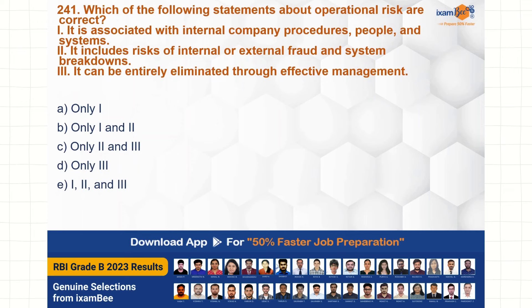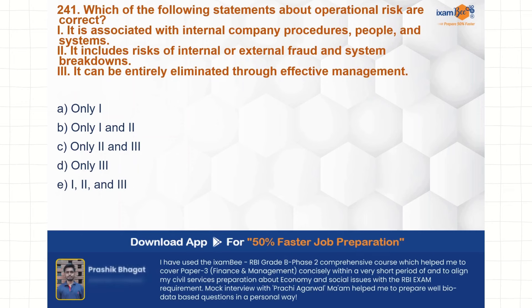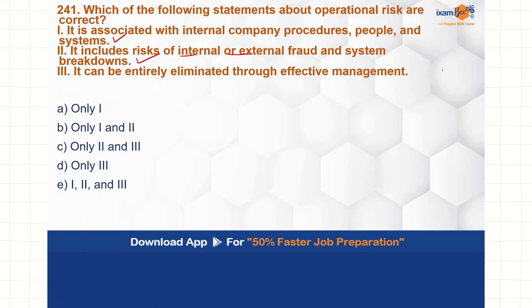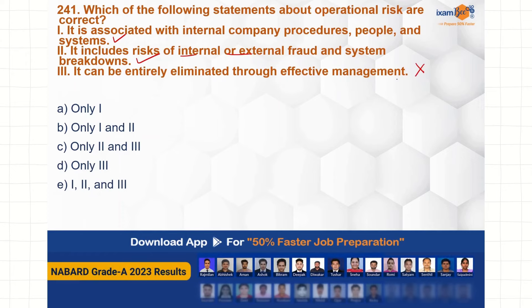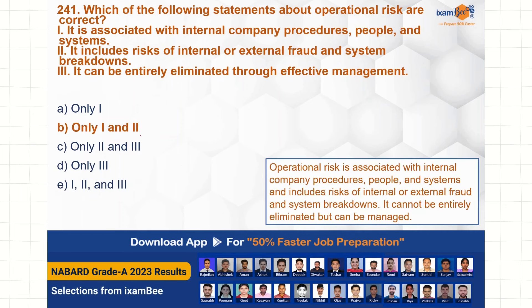Which of the following statements about operational risk are correct? It is associated with the internal company procedures, people and systems — this one is correct. It includes risk of internal and external fraud and system breakdown — this is also correct. It can be entirely eliminated through effective management — this one is not correct. Option B is the correct choice.